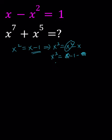So x cubed equals x minus 1 minus x. x cancels out, we end up with x cubed equals negative 1. Now we have x to the 7th plus x to the 5th.